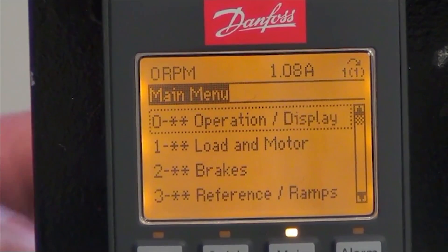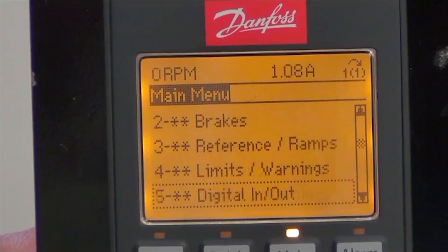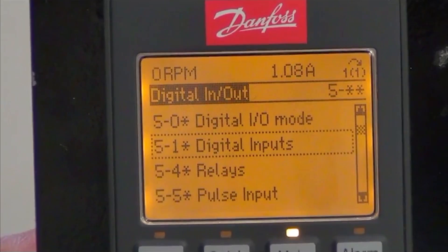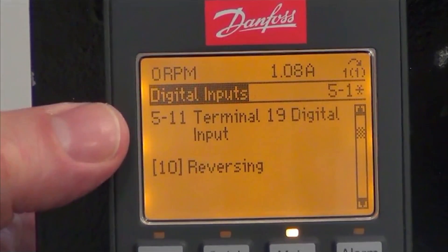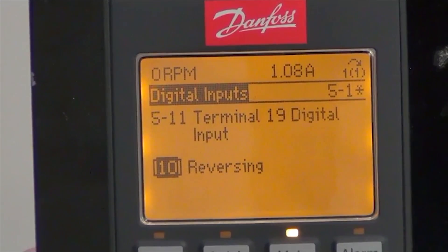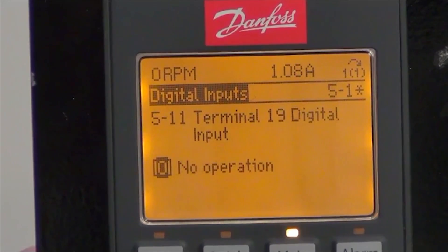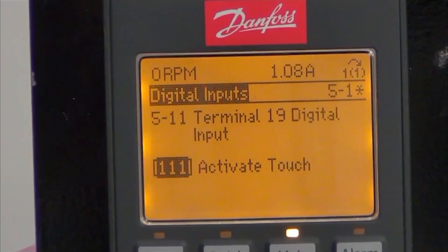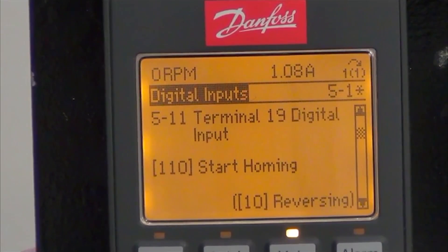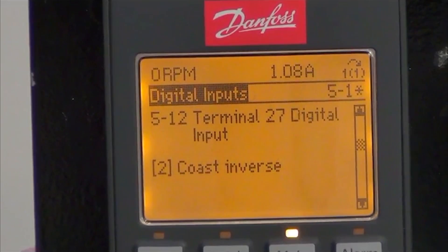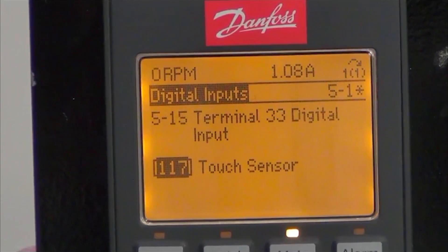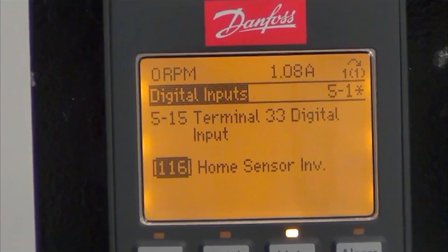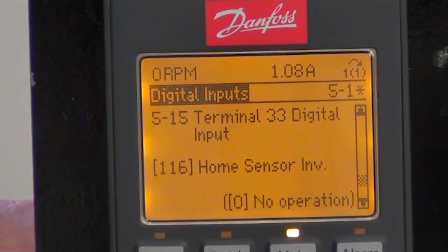The inputs are configured in group 5. So I will select digital inputs. The first one is terminal 18, which is already configured as a start signal. Terminal 19 must be my start home. Then I need to configure terminal 33 as my home sensor input. And I select home sensor inverse because this input or sensor is a normally closed contact.